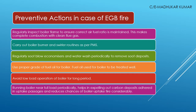Use the proper grade of fuel oil for the boiler — residual fuels inevitably give residues, soot, or unburnt carbon particles, but lighter fuels produce less, or if fuel is properly treated and perfect combustion conditions exist, you get clean flue gases. Avoid low load operation of the boiler for longer periods, as this is a main cause of incomplete combustion and incorrect air-fuel ratio. Running the boiler near full load periodically, or the main engine running at 85% MCR, helps expel carbon depositions due to higher exhaust gas velocities, keeping the uptake passages clean and reducing the chances of boiler uptake fire.